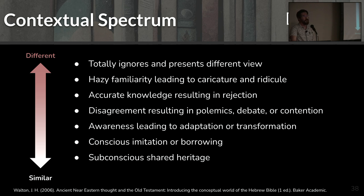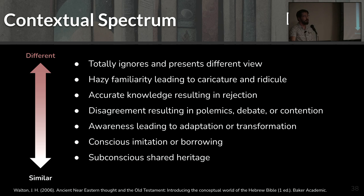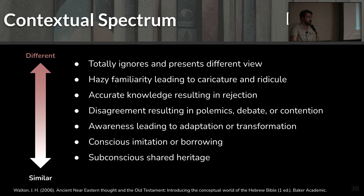First, the error in the Alvin/Carol scenario was that Alvin was only considering similarities towards a polemical purpose, and Carol was only considering differences towards a polemical purpose. But to do proper comparative analysis to rebuild that cognitive environment, we have to consider both the similarities and the differences. Secondly, the similarities could actually be indications of shared elements in that cognitive environment and not necessarily literature being borrowed from one to the other — you can think about shared genre forms.